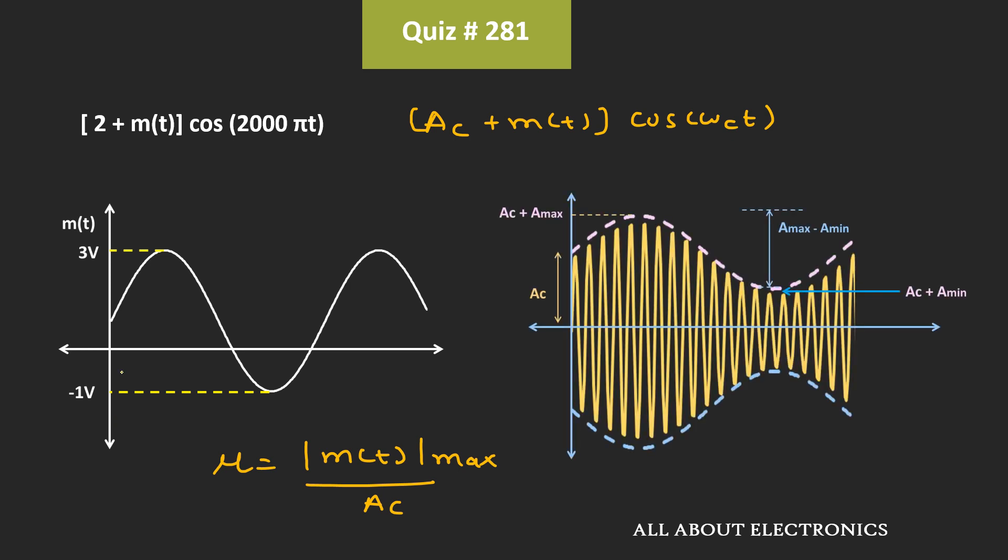That means here, this AC plus Amax will be equal to 2V plus 3V, that is equal to 5V. Similarly, here Amin is equal to -1. That means AC plus Amin will be equal to 1V. That means this point will be equal to 1V.